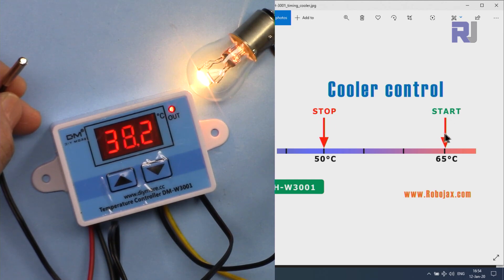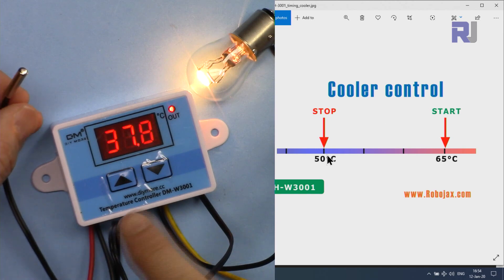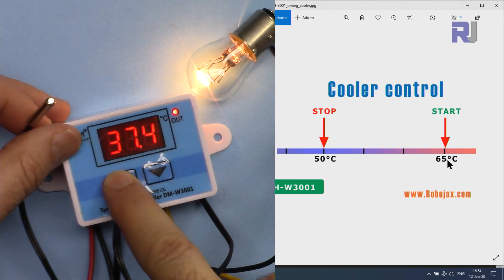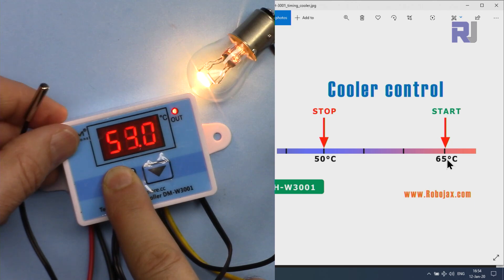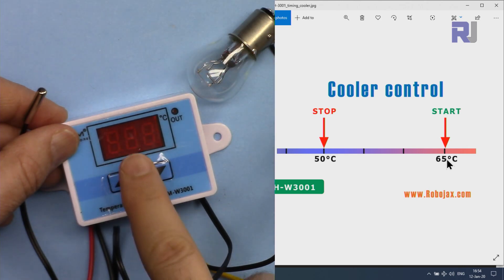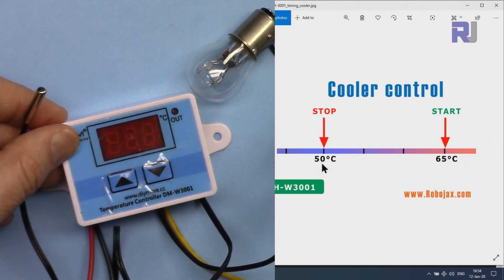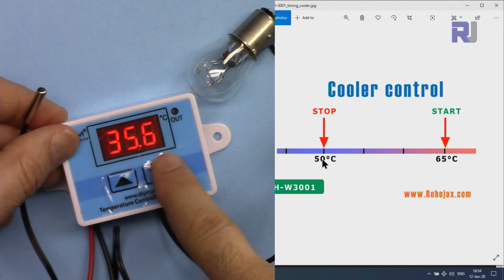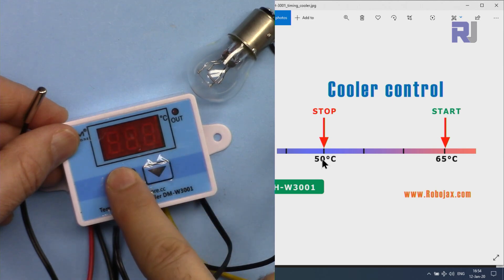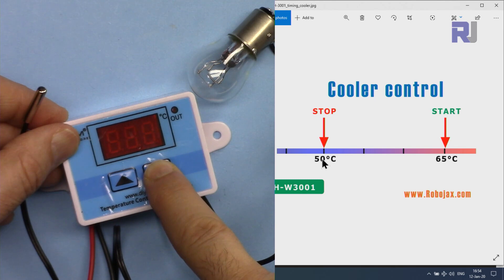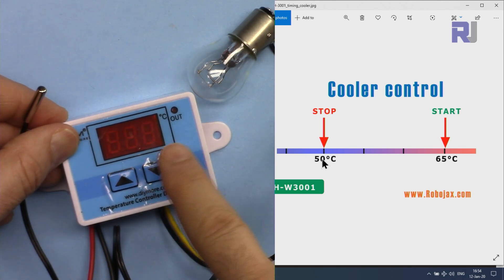For cooler let me change the start to 65. Press this, you see 50, hold it for a few seconds, it blinks, and now increase it. Let's go to 65. So now it is 65 and then stop is 50. Wait for this and then press this, and then you can hold it and decrease it to 50. Now it is set to 50.